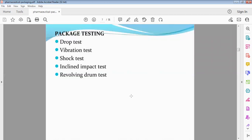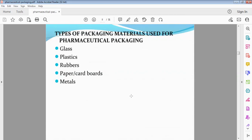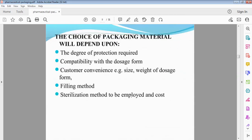Package testing - drop test, vibration test, shock test, inclined impact test, revolving drum test. Types of packing material used for pharmaceutical packaging - glass, plastic, rubber, paper, cardboard, aluminum, metals. Choice of packaging material will depend upon the degree of protection required, compatibility with the dosage form, customer convenience, size, weight, filling method, sterilization, cost.